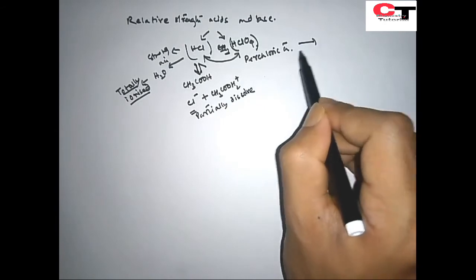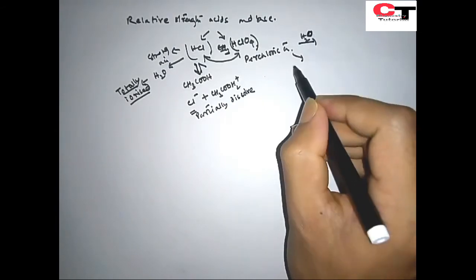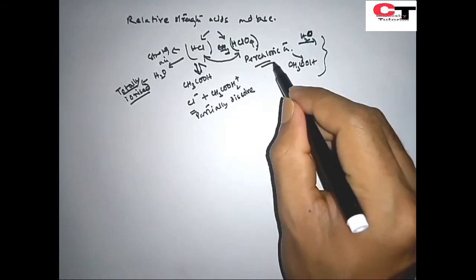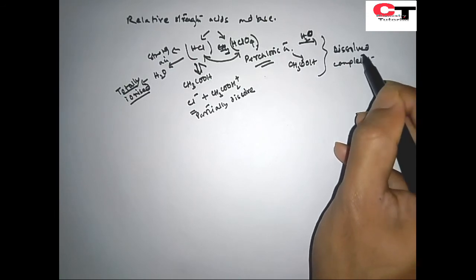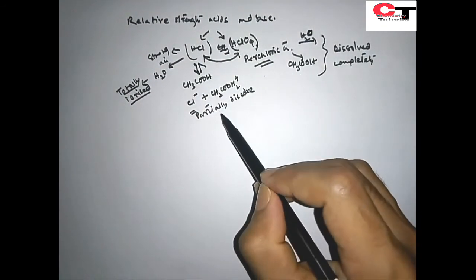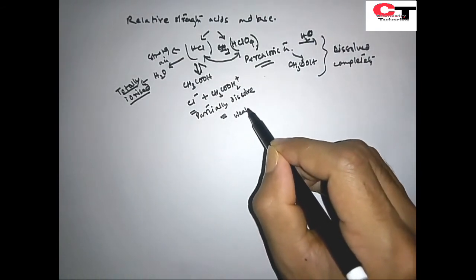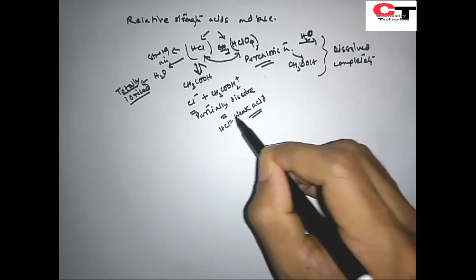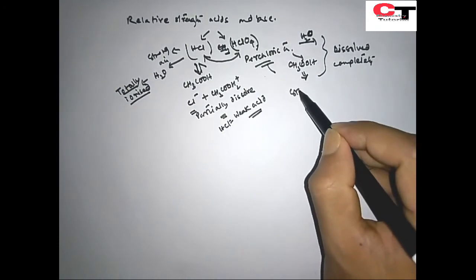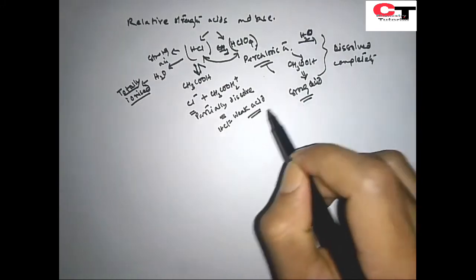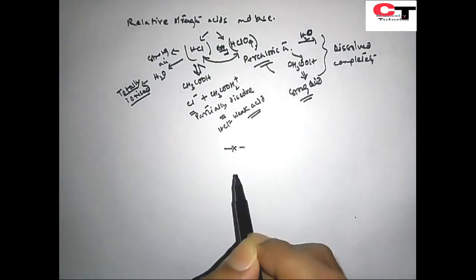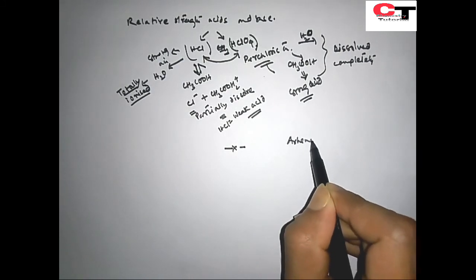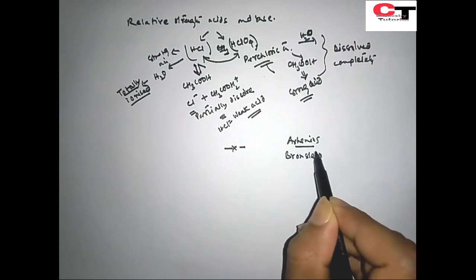If we dissolve perchloric acid in both water and acetic acid, in both cases perchloric acid dissolves completely. Since HCl only partially dissociates in acetic acid, HCl is a weak acid in that solvent — but perchloric acid is a strong acid in acetic acid. This is how we can compare the relative strength of different acids. This much is sufficient from the Arrhenius and Bronsted-Lowry concepts.